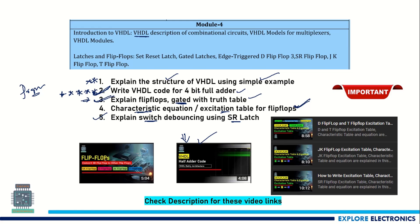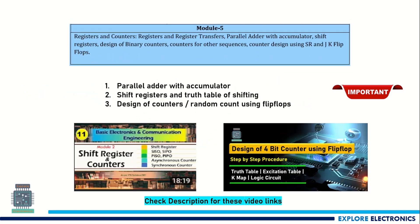A sure question in Module 4 is writing a VHDL code for a half adder, full adder, four-bit adder, or multiplexer. Coming to Module 5, which covers registers and counters — shift registers are the main topic. Parallel adder with accumulator has also been asked many times. The key concepts are how shifting happens and how the circuit is designed for parallel-in serial-out or serial-in parallel-out configurations using flip-flops.